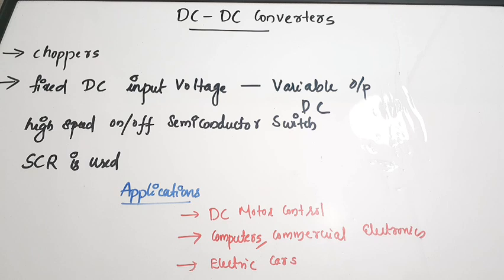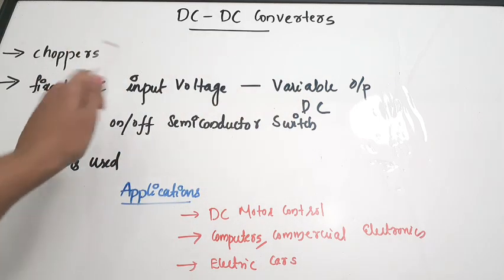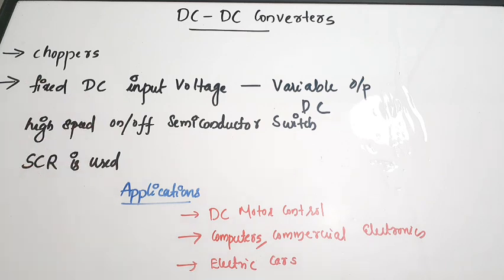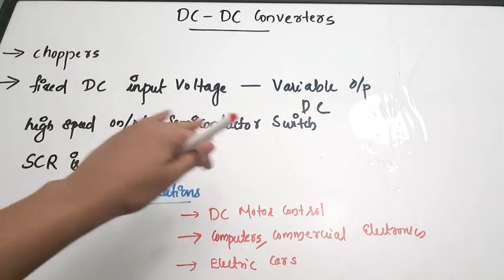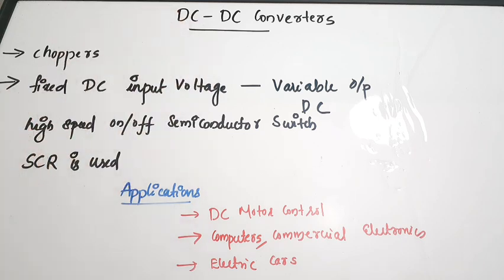What is a DC to DC converter? We have heard of AC to DC converters and DC to AC converters. A DC to DC converter takes a fixed DC input voltage and the circuit chops that fixed DC input voltage, giving you a variable output DC voltage. So both input and output are DC, but the input is fixed while the output is variable — you get a chopped version of your input. Due to this chopping action, these circuits are called choppers.